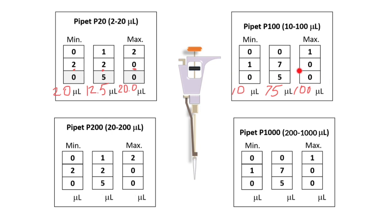As you see, the last numbers here are shown on the same background as the rest of the numbers, unlike what we saw with the P20. So we don't put any decimal point here. Now let's move to the P200 micropipettor settings, where readings can be between 20 and 200 microliters.